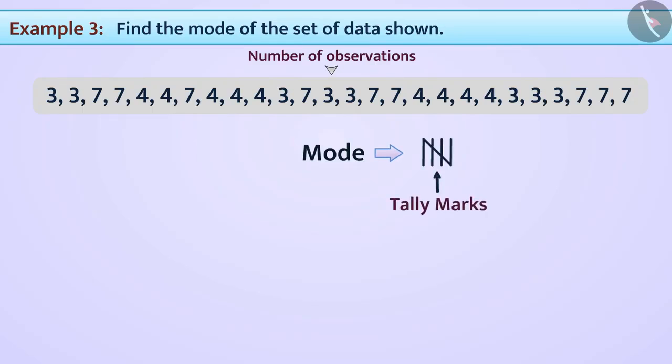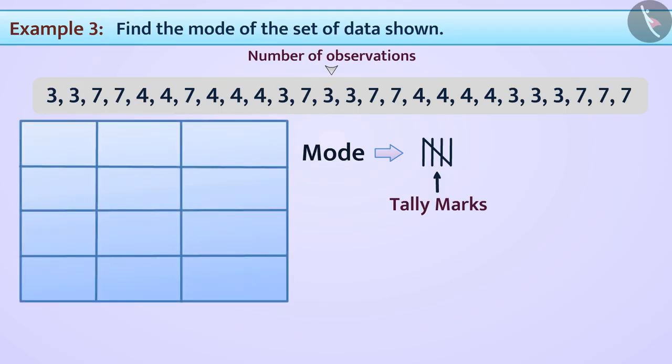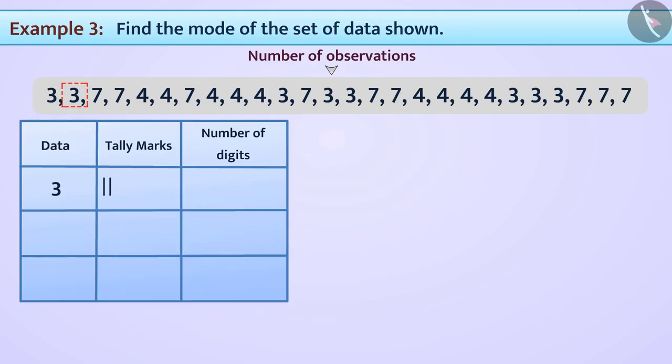For this, we will first create a table. We will place the data in the first column, the tally marks in the second column, and the number of digits in the third column. Let us go from left to right and make tally marks.